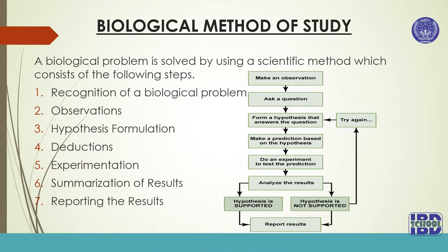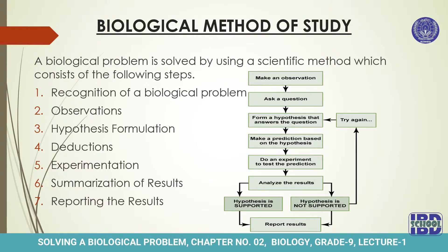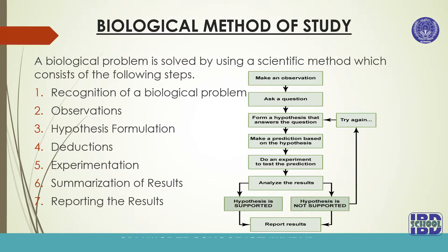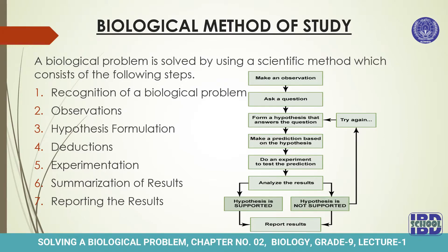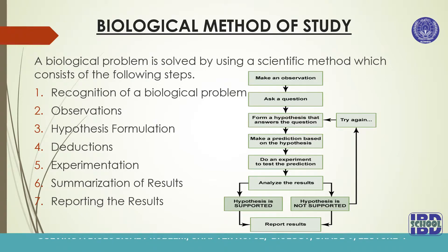Look at the flowchart. As you can see, the first step after recognition of a biological problem is to make observations. Then, on the basis of those observations, a question is asked and we make a hypothesis. A hypothesis is a statement which is based upon the observations. Then predictions are made — these predictions are also called deductions, which are made on the basis of the hypothesis.